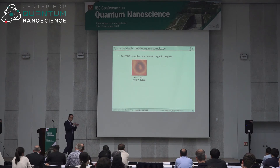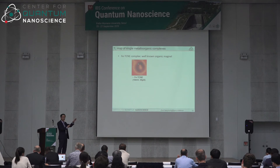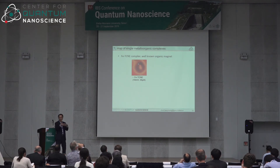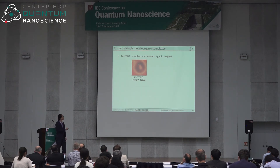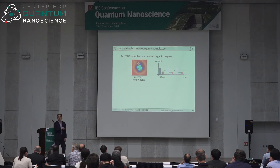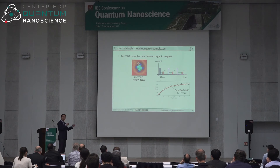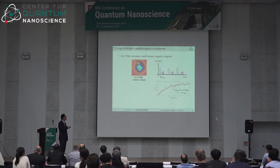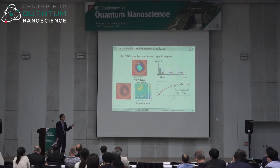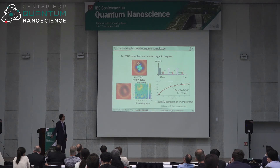Mapping spin distribution of molecules is a very interesting topic. We tested TCNQ molecules — a well-known organic magnet with spin-1/2 and high electron affinity, where attaching a metal atom can cause charge and spin transfer. When we placed a TCNQ nearby an iron atom, the atom appeared to disappear in STM. Using a pump-probe experiment with delay time set to about 10 microseconds (the T1 we measured for iron alone was tens of microseconds), we can scan and locate the lock-in signal to identify where the iron spin is — enabling us to detect spins on molecules using pump-probe techniques.